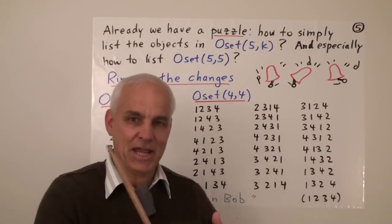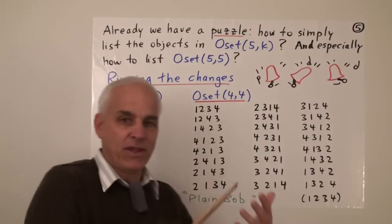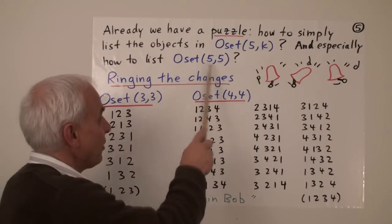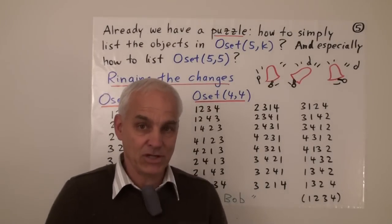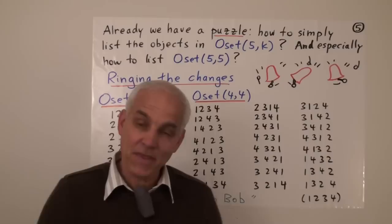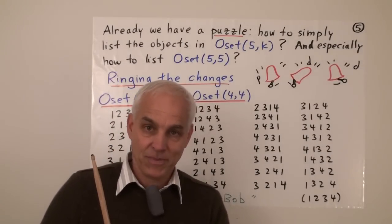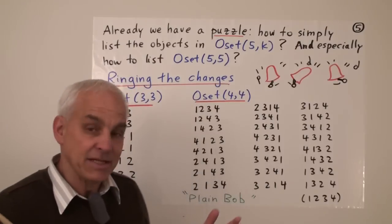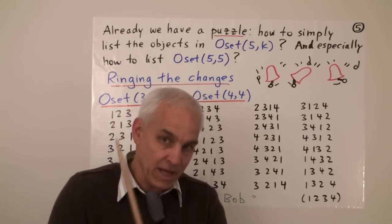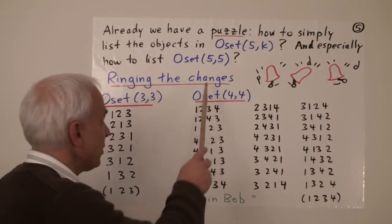Alright, so when we've been listing these ordered sets from 5, we've seen that there's a bit of a puzzle here. How do we actually do this in a systematic, organized way? In particular, how do we do it when we're looking at all 5 permutations? 5 permutations or 5 ordered sets from 5? Well it turns out that that question has actually been studied very intensively by church bell ringers.